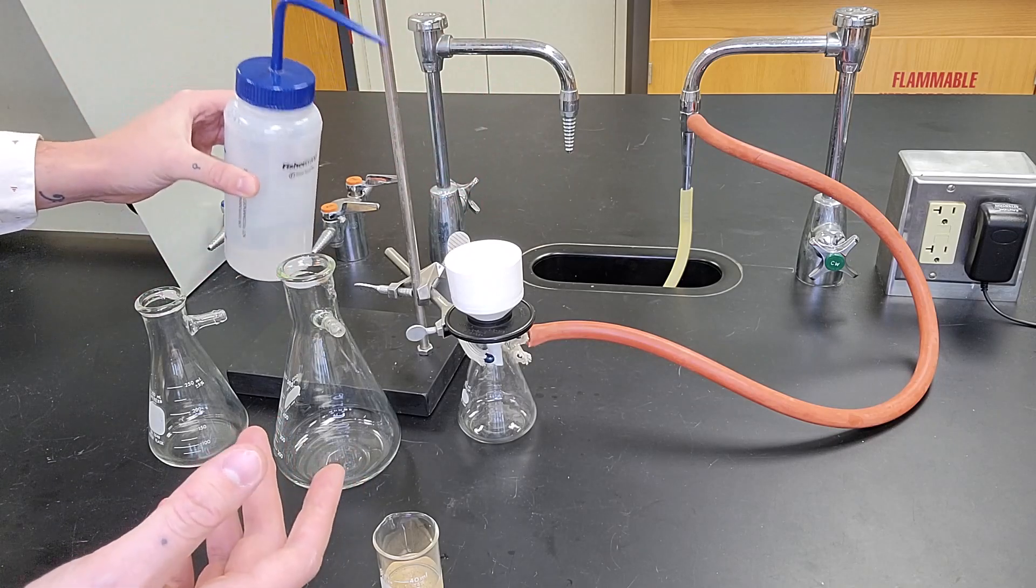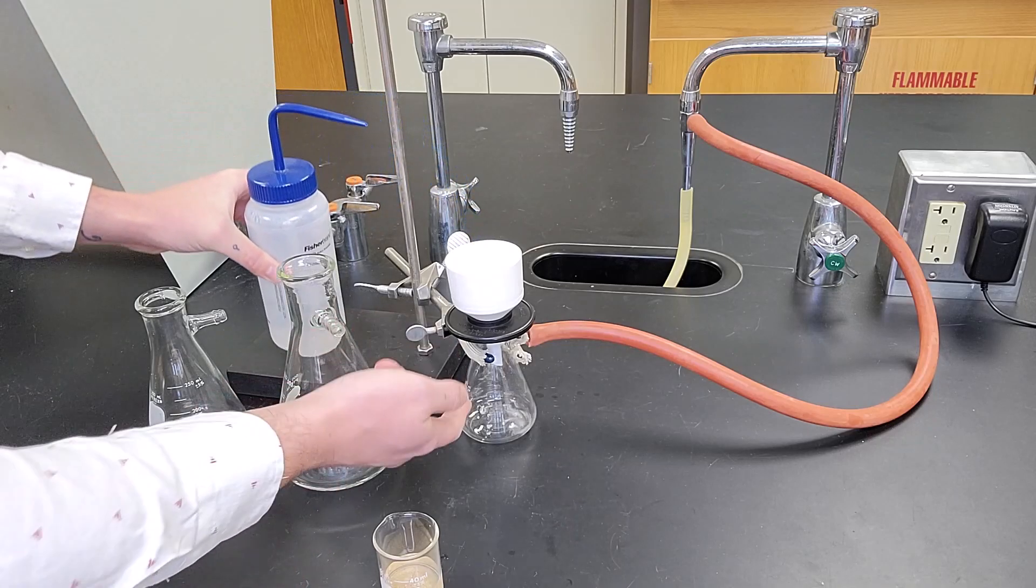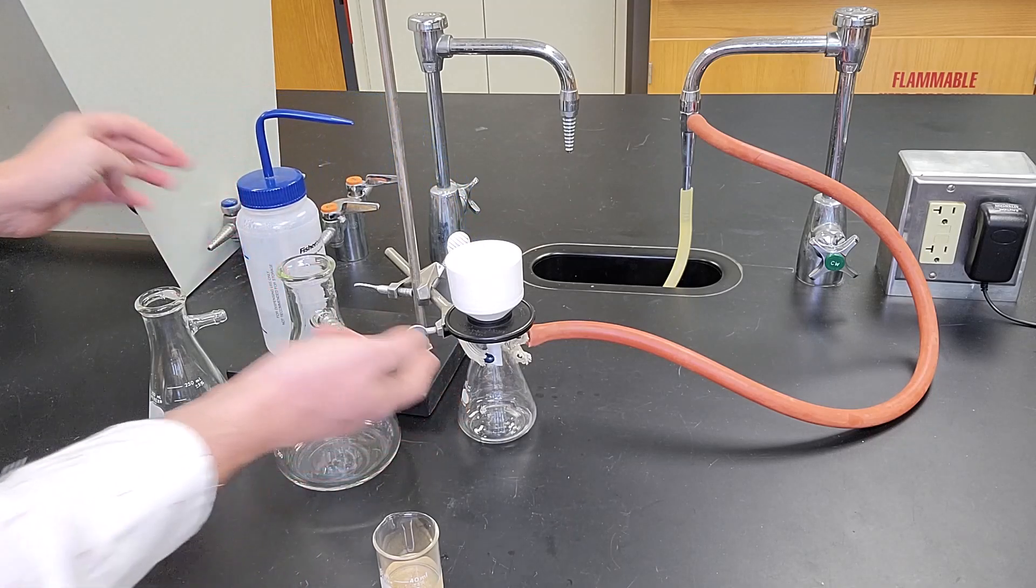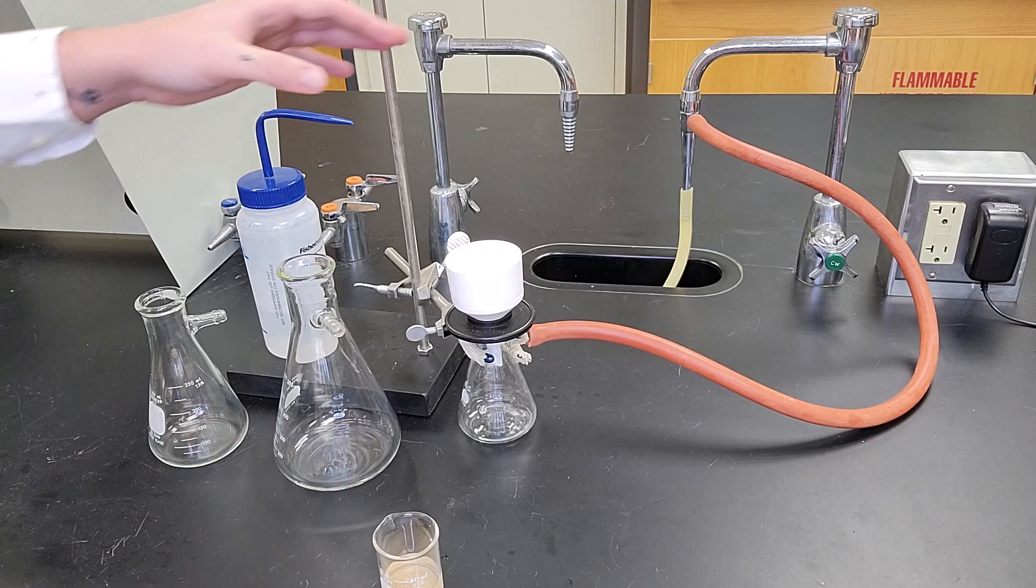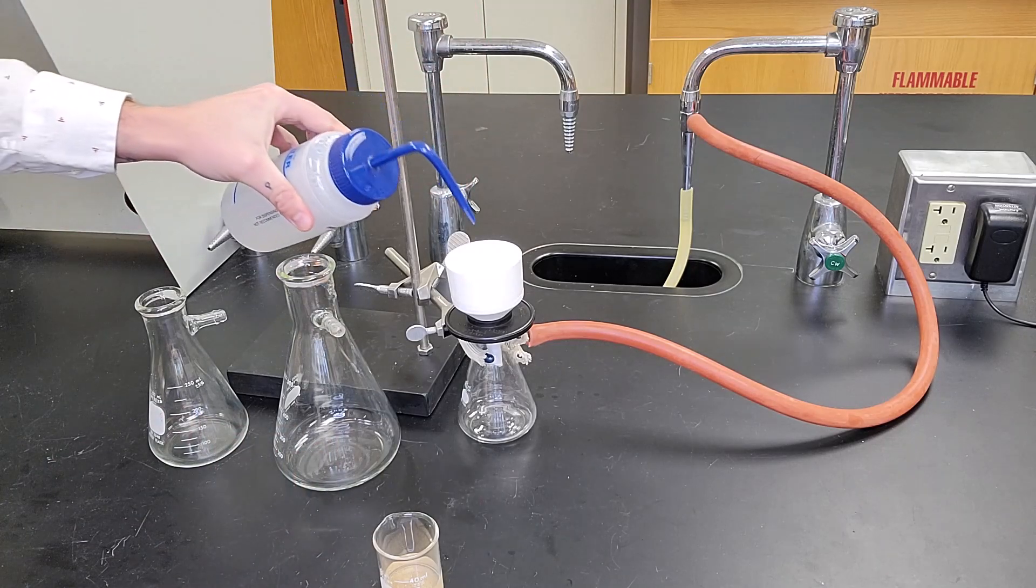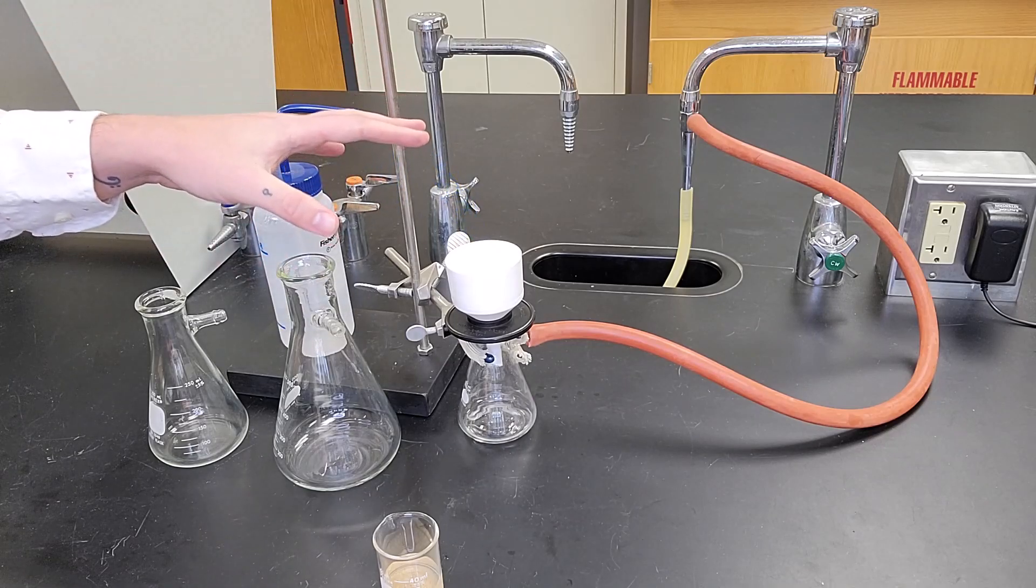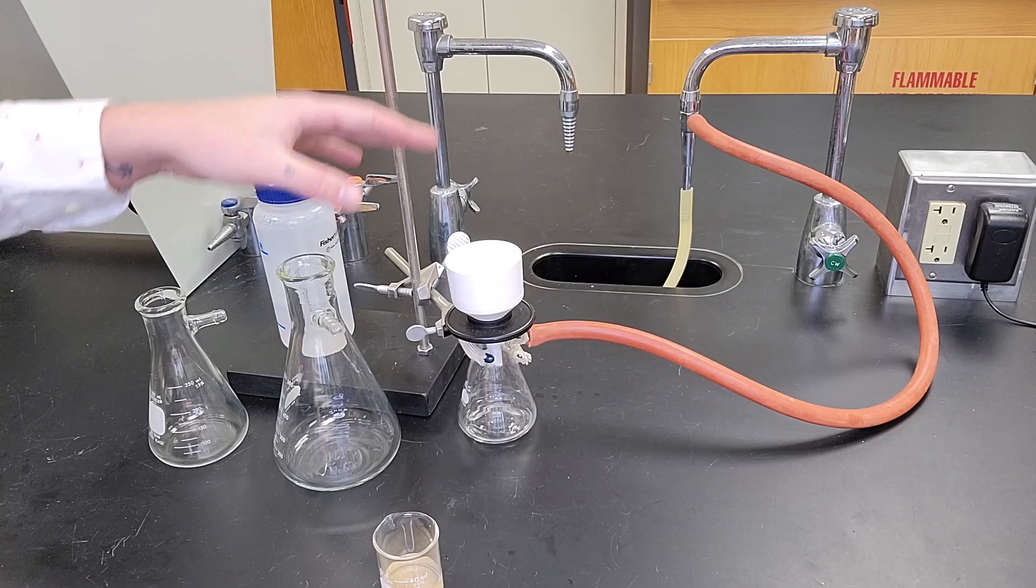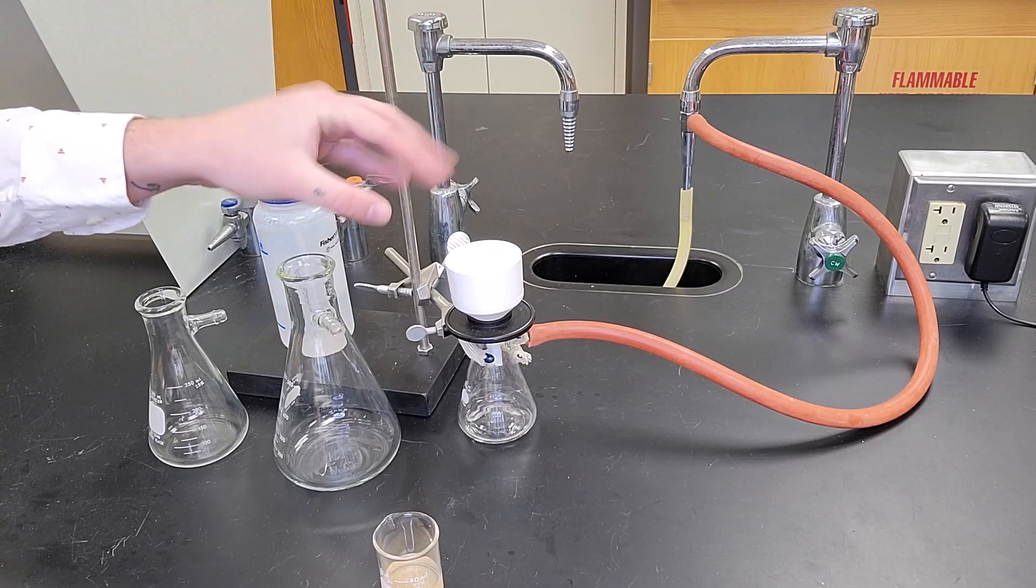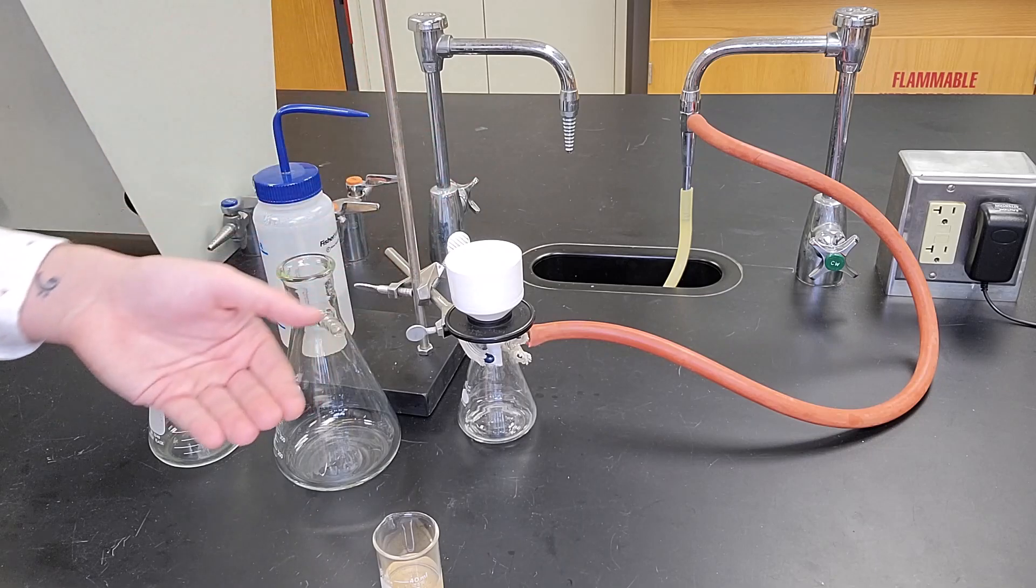So what I'm going to do is take my wash bottle and spray a little bit of water, and what we'll see is the water starts coming through the bottom. The filter paper is now adhered. I'm actually going to make sure it's a little wetter. It doesn't really matter how much solvent you put through on this one—you really just want to make sure you put enough to adhere it to the filter so when you pour your solid, you don't lose it through the bottom.